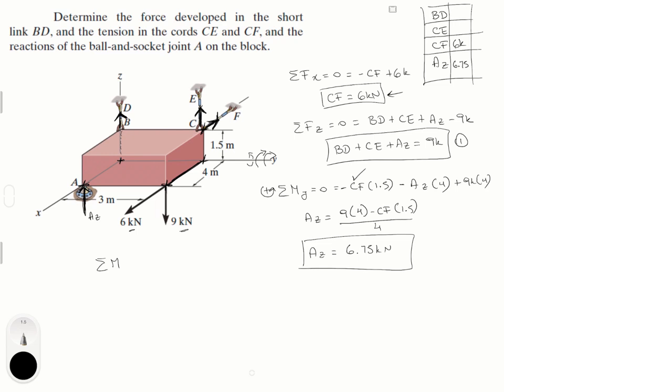Now, almost there, sum of the moments in the X is equal to zero. We're going to assume counterclockwise is positive and on the X, you know that AZ is not creating any moment because it's being applied right to the axis. BD is coming straight out of the axis so that's also not creating any moment. The 6 kN force is parallel to the axis so it's not creating any moment. The CF is parallel to the X axis so it's not creating any moment. And all the others are.